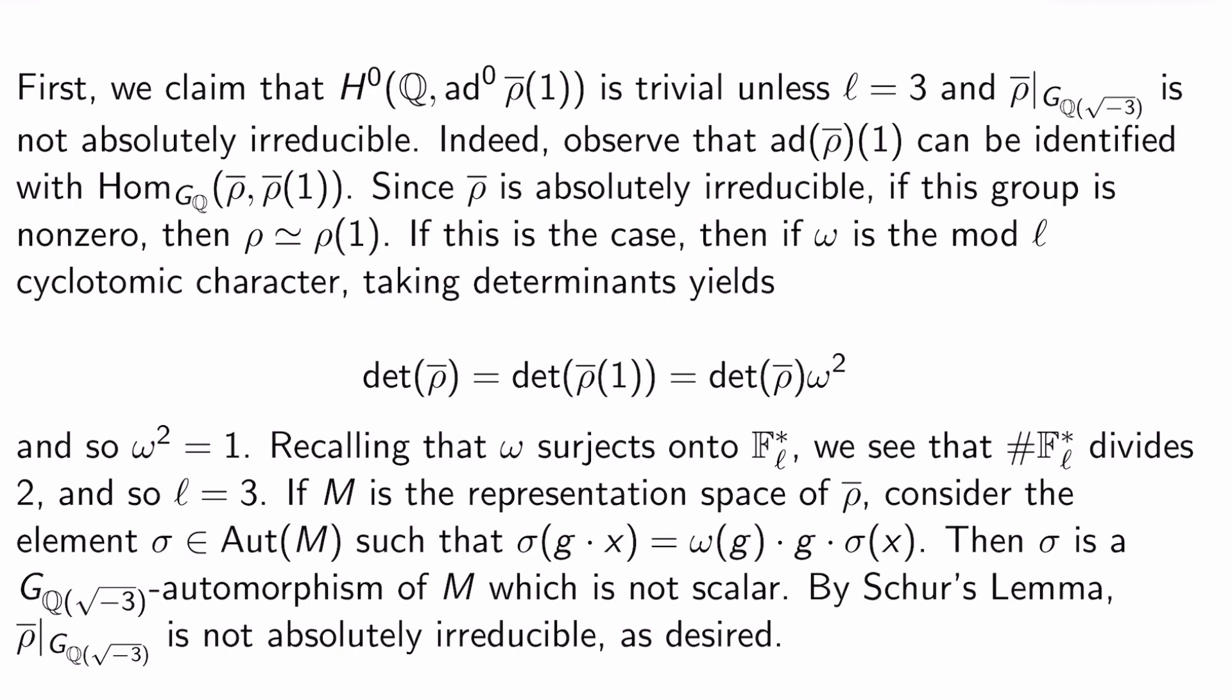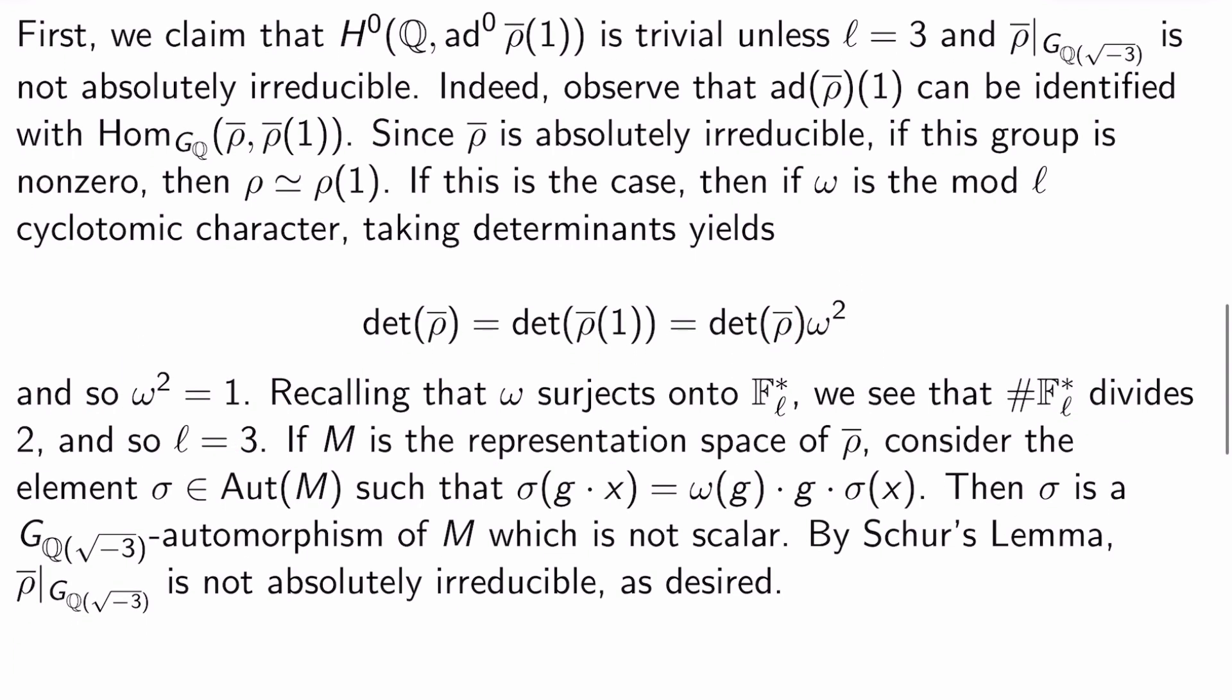If this is the case, then if ω is the mod l cyclotomic character, taking determinants here yields det ρ̄ equals det ρ̄(1). But because of how the Tate twist is defined, that's just det ρ̄ ω^2. And so ω^2 has to be 1. But if you recall that ω surjects onto F_l^*, we see that the cardinality of F_l^* has to divide 2, which forces l to be 3. And then if M is the representation space of ρ̄, consider the element σ in automorphisms of M that satisfies the property that σ(g·x) = ω(g)·g·σ(x).